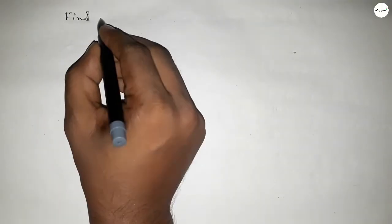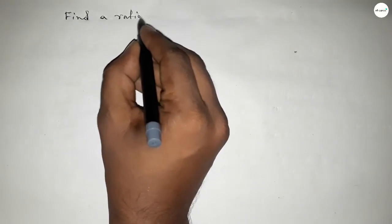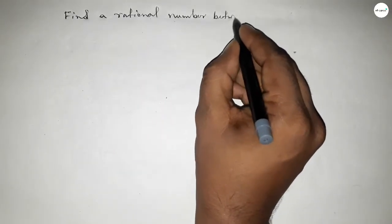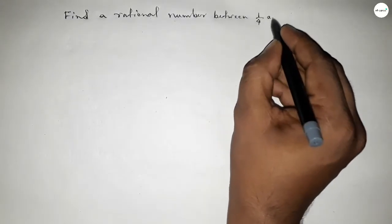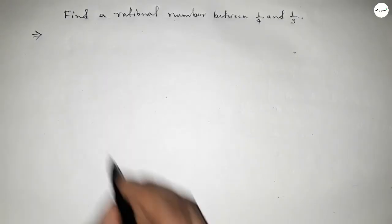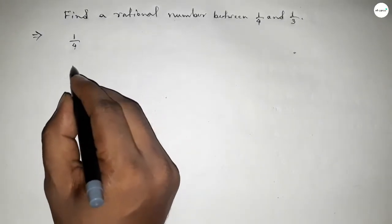Hi everyone, welcome to SSR Classes. Today in this video we have to find a rational number between 1 over 4 and 1 over 3. So let's start. First of all, write down here 1 over 4 and 1 over 3.